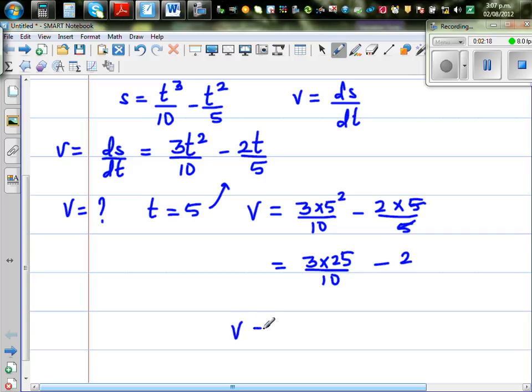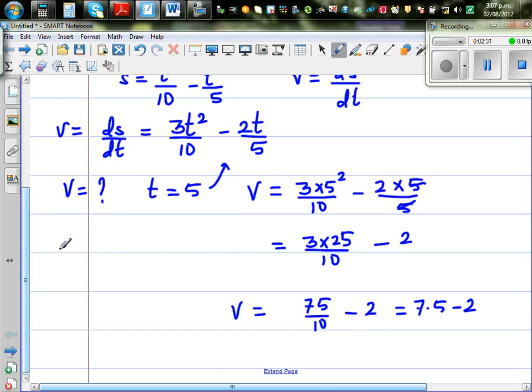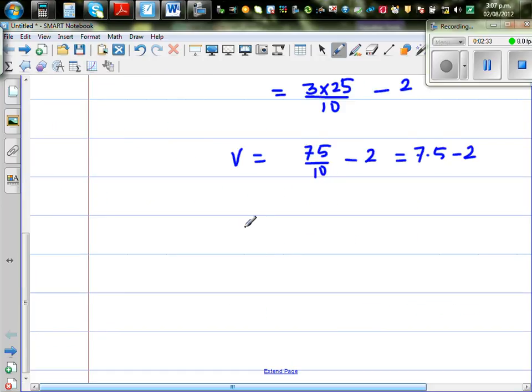So velocity is equal to 75 over 10 minus 2, which is 7.5 minus 2, which is 5.5 meters per second.